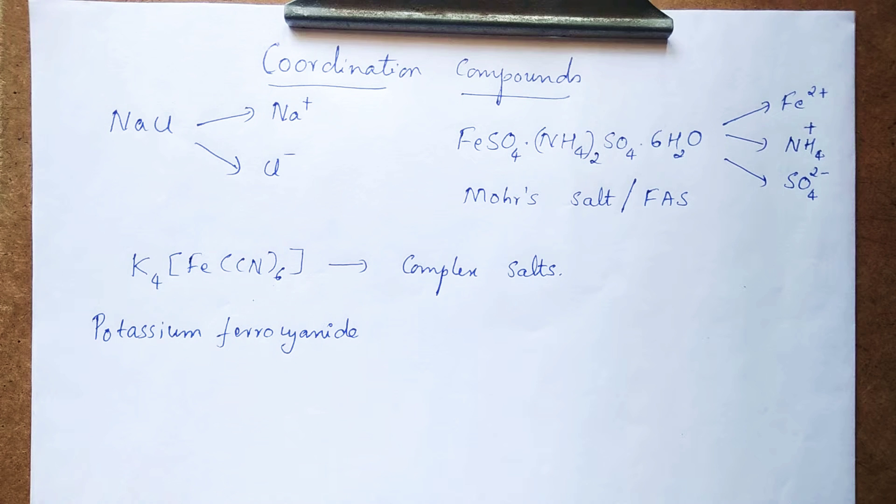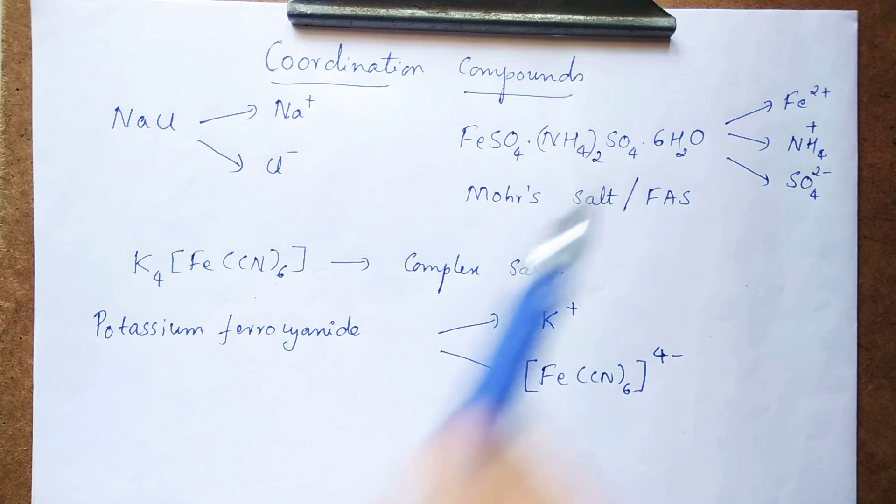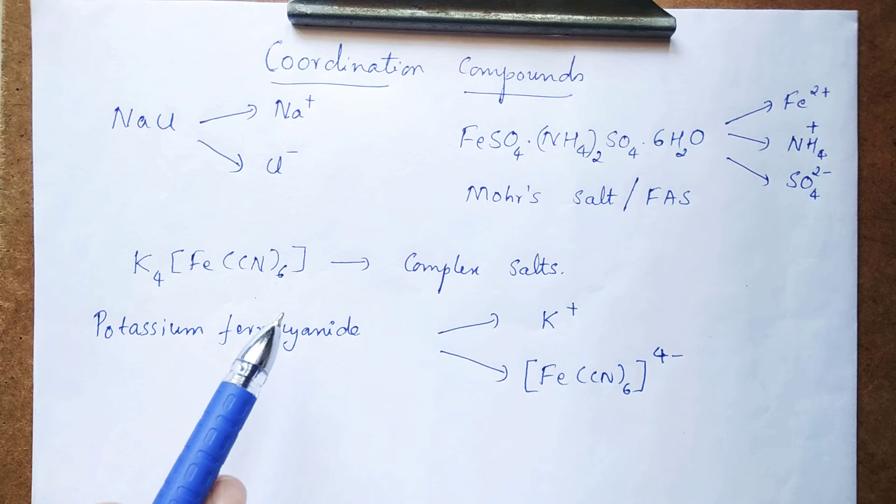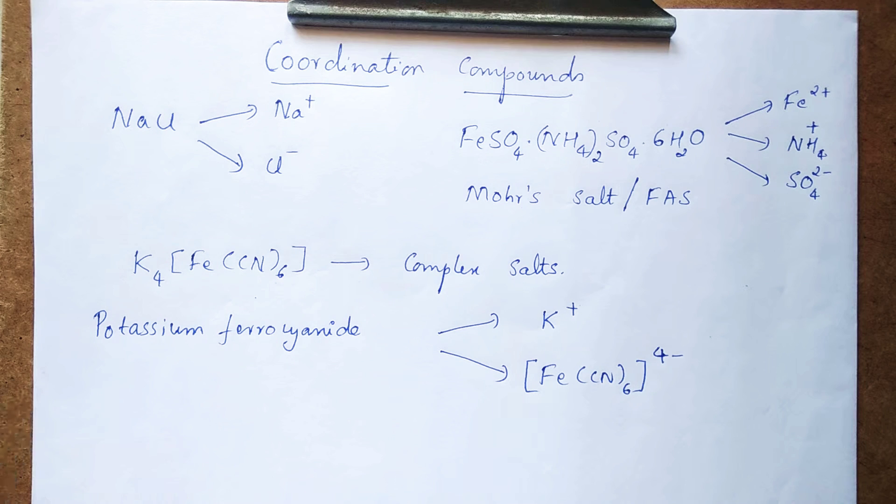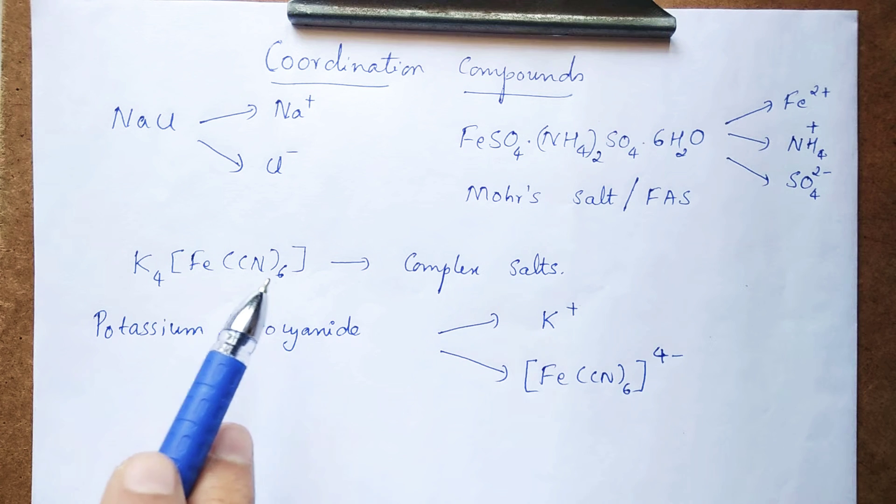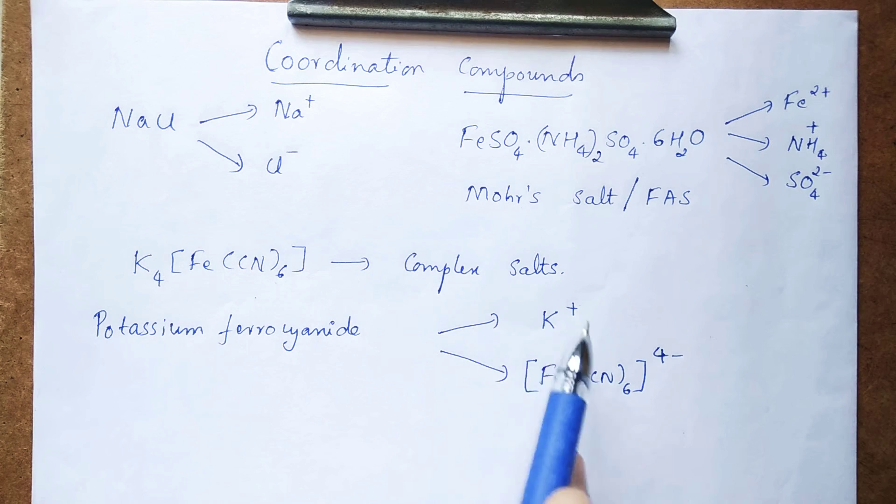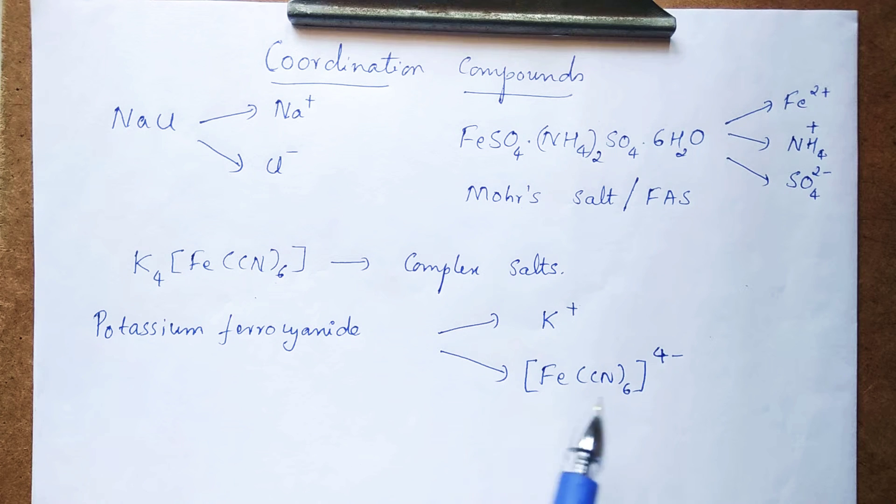Now coming to the important thing, if I try to dissolve potassium ferrocyanide in water, what will I get? Just like these two salts, potassium ferrocyanide also undergoes dissociation, but it is not a complete dissociation. So what do we get here? Potassium ferrocyanide dissociates into potassium ion, that is K+ ion, and a complex ion. It is a combination of two groups, it is called ferrocyanide ion.